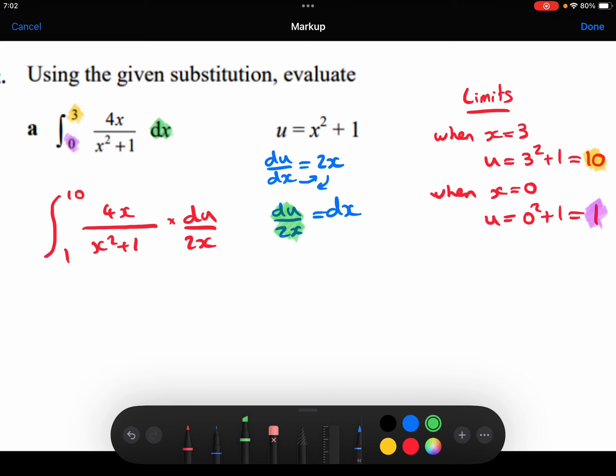Looking at this, I can see we've got some cancellation here and here. The 4x over 2x will cancel and just leave me a 2 on the top. And this x squared plus 1 is just u in the u world.